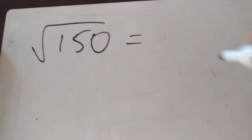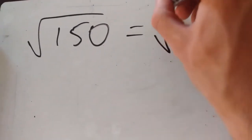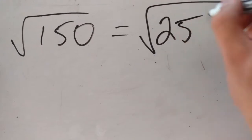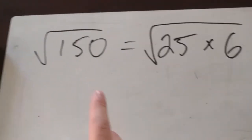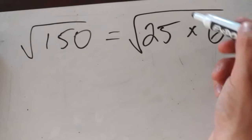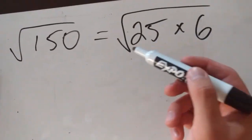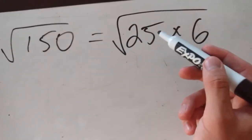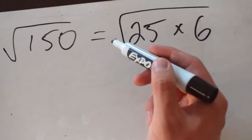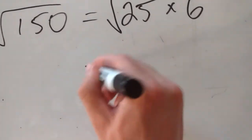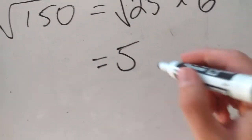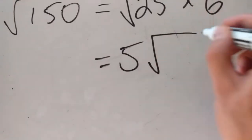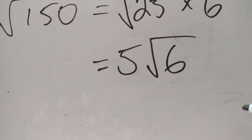So we can rewrite the square root of 150 as the square root of 25 times 6, because 25 times 6 is 150. We took a perfect square so we can take the square root of it and bring that answer to the outside. The square root of 25 is 5, so we're left with 5 times the square root of 6.